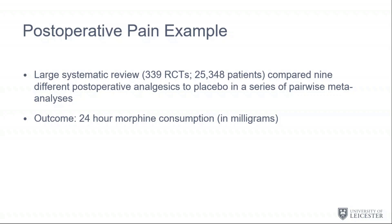Morphine is about the most powerful analgesic you can give, but it has side effects, so you don't want to give more than necessary — it's a rescue medication. Generally, other drugs are given first to relieve as much pain as possible, and the outcome is often how much less morphine is used, i.e., the difference in morphine consumption between arms of the trial — milligrams of morphine.